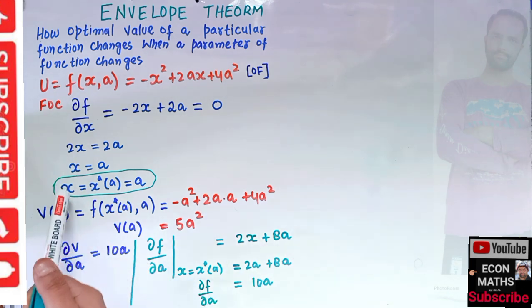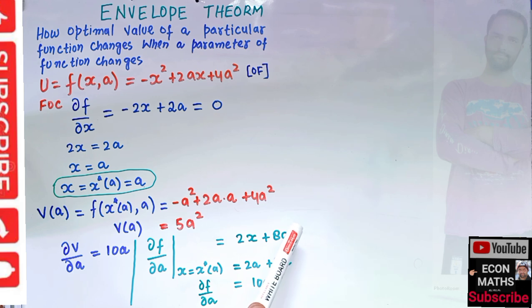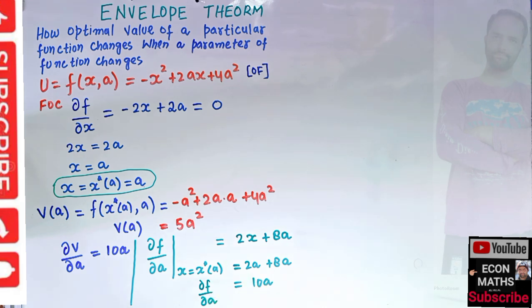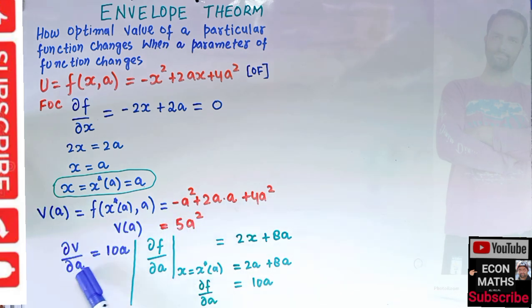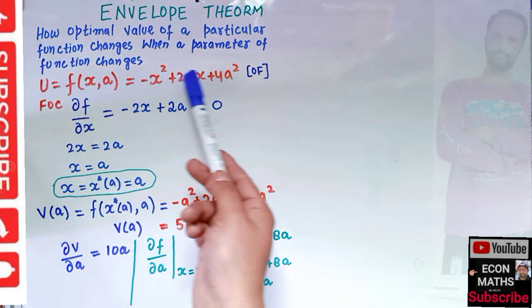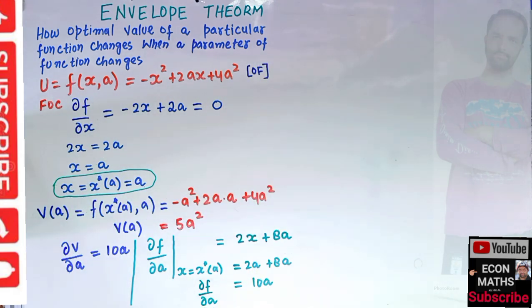This gives us a shortcut method for finding the change in the optimal value due to a change in the parameter. We simply differentiate the objective function with respect to the parameter and evaluate it at the critical point — this is the essence of the envelope theorem.